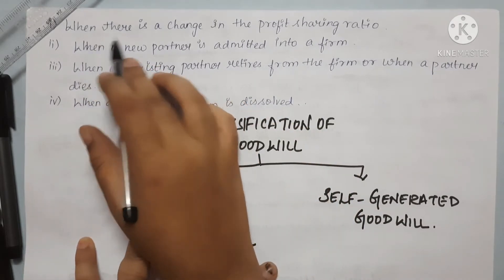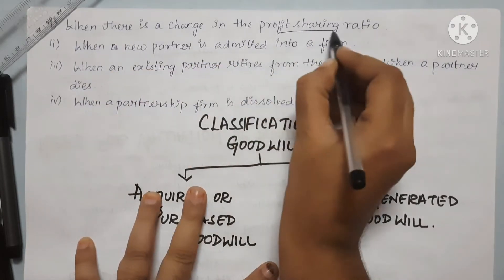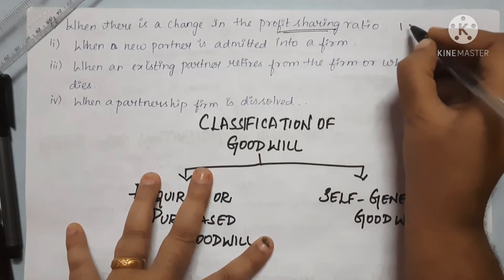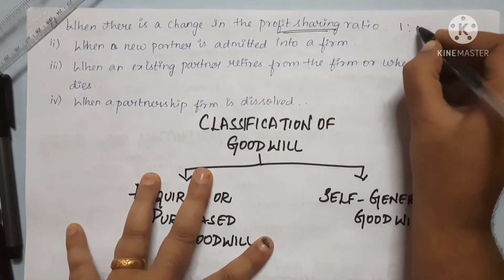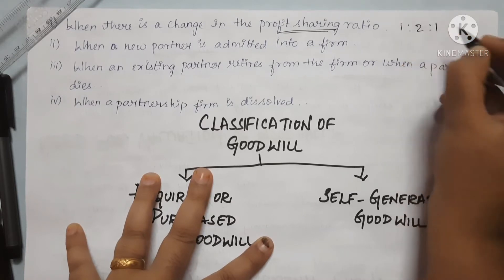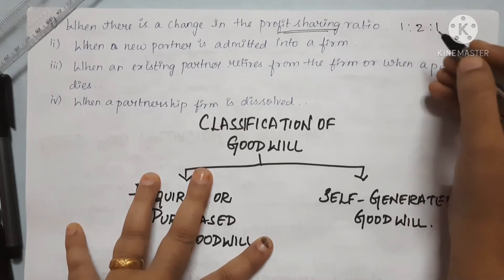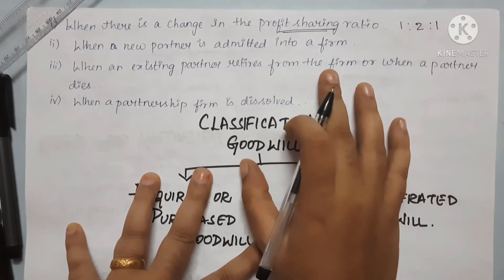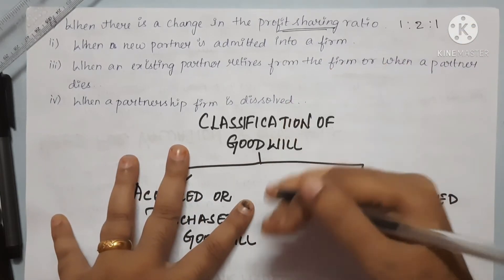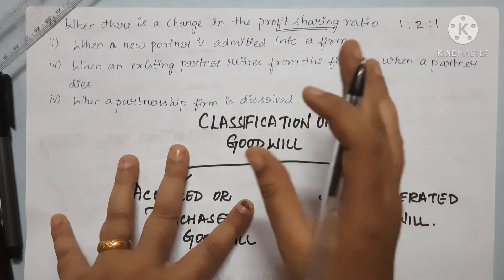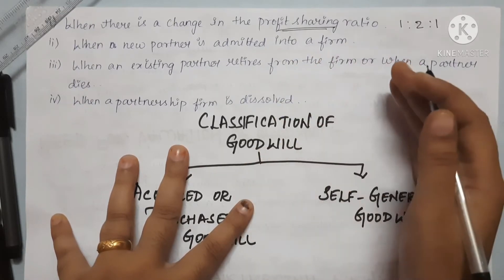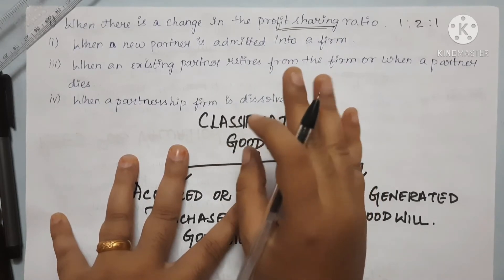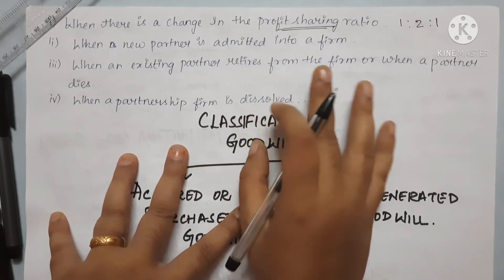The first circumstance is when there are changes in the profit sharing ratio. For example, if there are three partners with a ratio of 1:2:1 and these ratios change, then we need to do the valuation of goodwill.